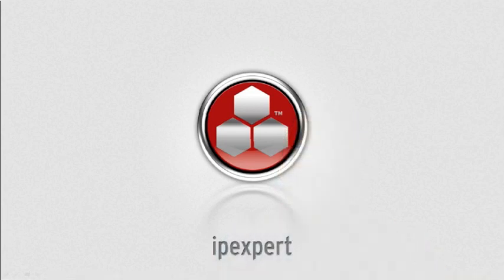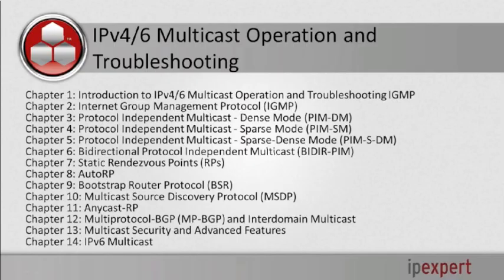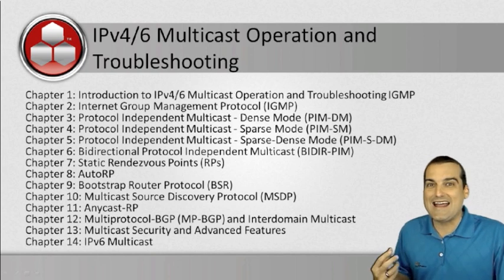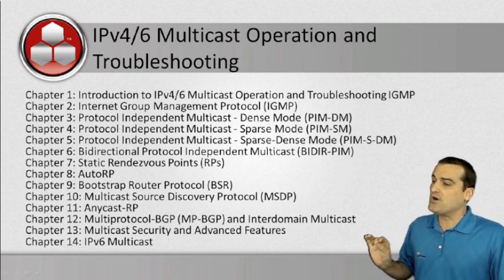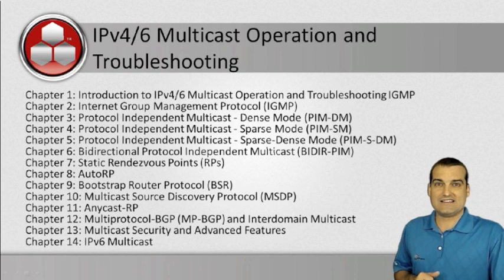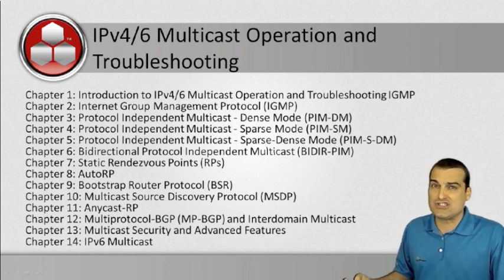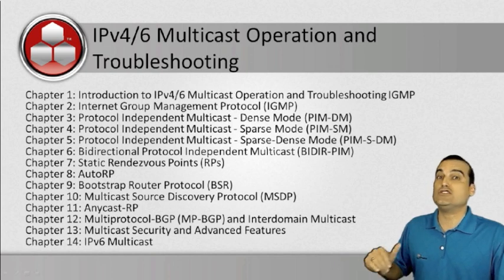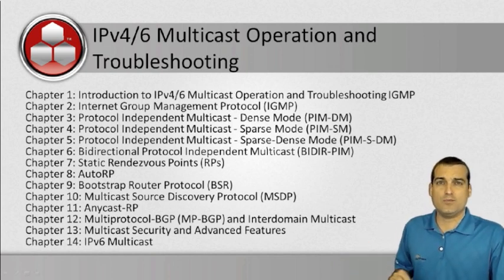So the first book in this new series from ipxpert is indeed on IPv4 and v6 multicast operation and troubleshooting. The 14 chapters of this book will guide students through the operation and troubleshooting for each aspect of multicast technologies found in routing and switching, service provider, security, and even voice — and this book will do a job like no other book of its kind.